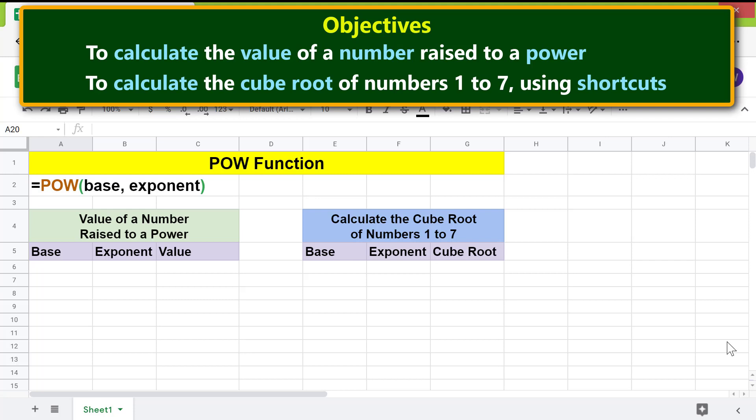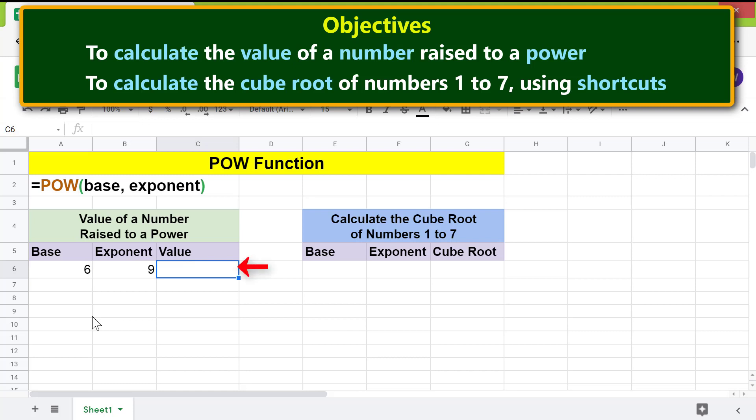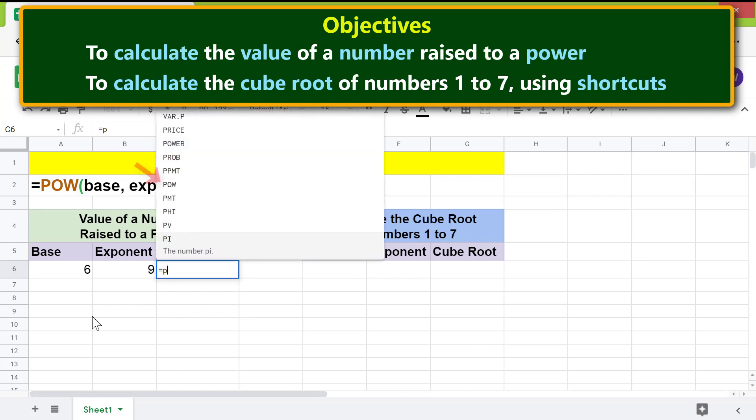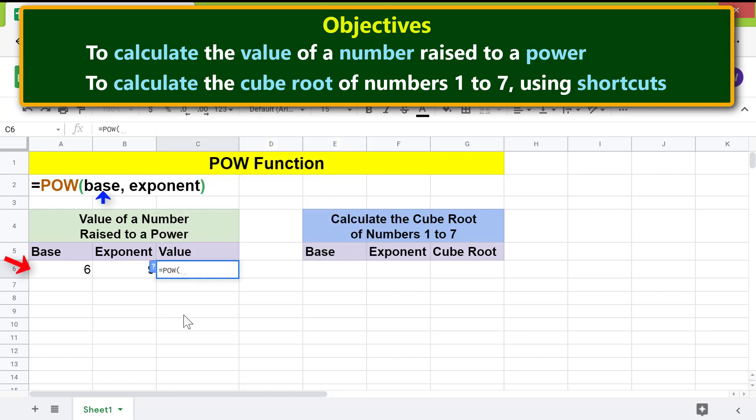Moving forward, let me type the value for the base in this cell and for the exponent in this cell. Next, let's type the power function formula. First type equal to P, select power. For base, click this cell, type comma, for exponent, click this cell. Press enter. There you go! 6 raised to the power of 9 is this value.